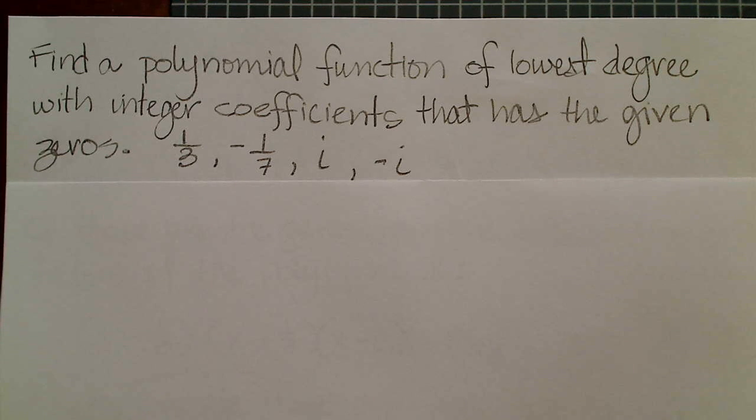For this problem, we are asked to find a polynomial function of lowest degree with integer coefficients that has the given zeros. And my zeros are one-third, negative one-seventh, i, and negative i.